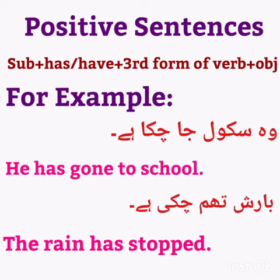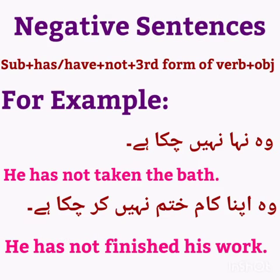Now carefully revise present perfect tense — negative sentences. Formation: subject plus has not / have not plus third form of verb plus object. For example: 'He has not taken the path.' 'He has not finished his work.' Simply, we will write 'not' with has or have.